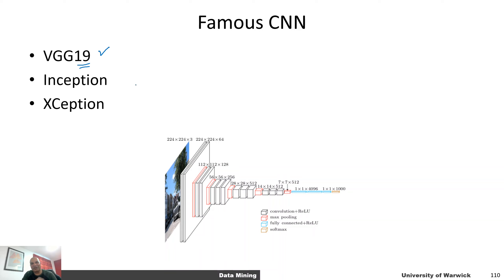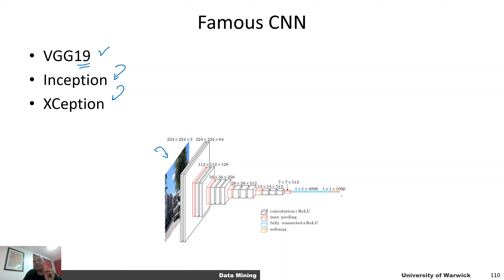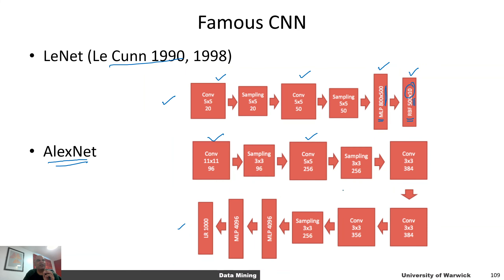There are other variants as well that I welcome you to explore. There's VGG-19 by Oxford, which has 19 layers — take a look at that architecture, there are many good references available online. There are also Inception and Xception neural networks that take an input image and produce a corresponding output, with really cool ideas built into them. Rather than going through each architecture, I encourage you to explore them on your own.